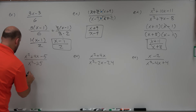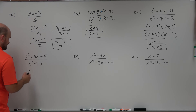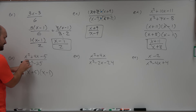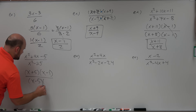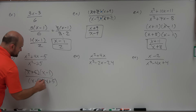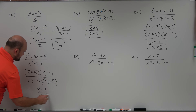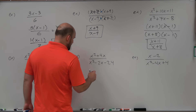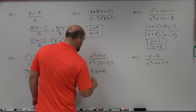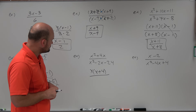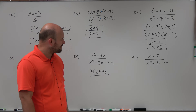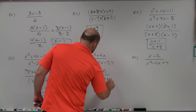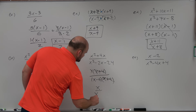In the next example, the numerator factors as x plus 5 times x minus 1, and the denominator is a difference of two squares, which factors as x minus 5 times x plus 5. Since x plus 5 divides out, the answer is x minus 1 over x minus 5. In the following example, I factor out the GCF of x from the numerator to get x times x plus 4. The denominator factors as x minus 6 times x plus 4. Since x plus 4 divides out, the final answer is x over x minus 6.